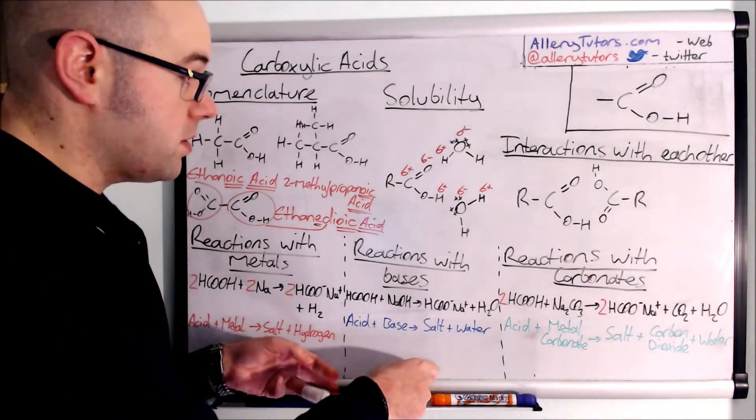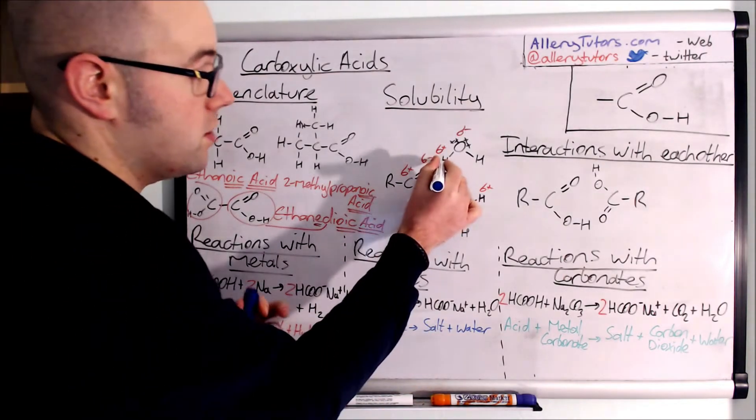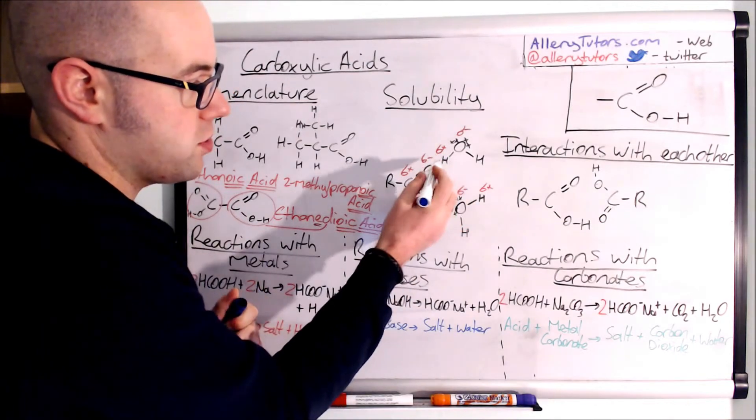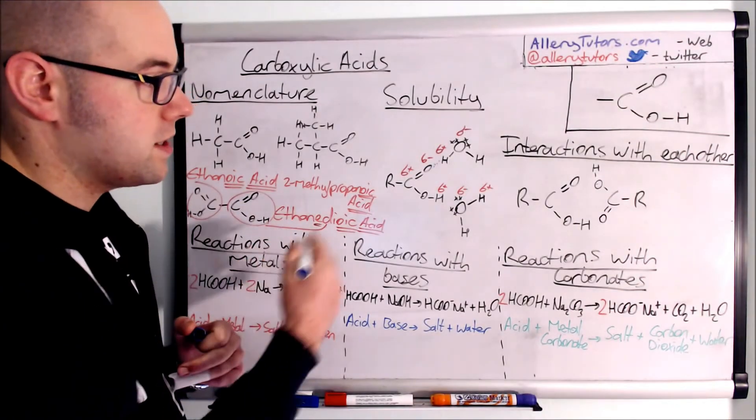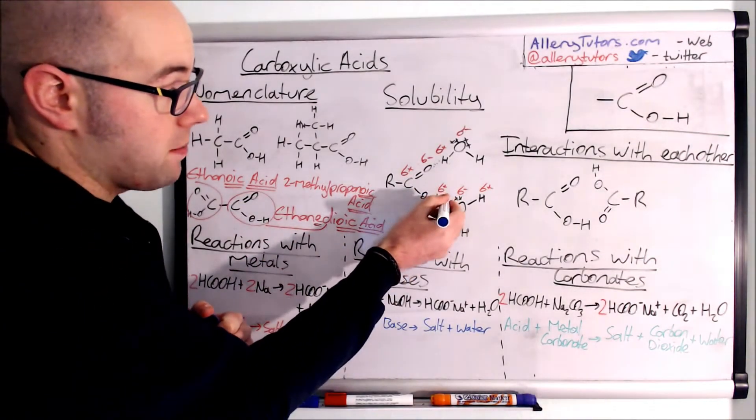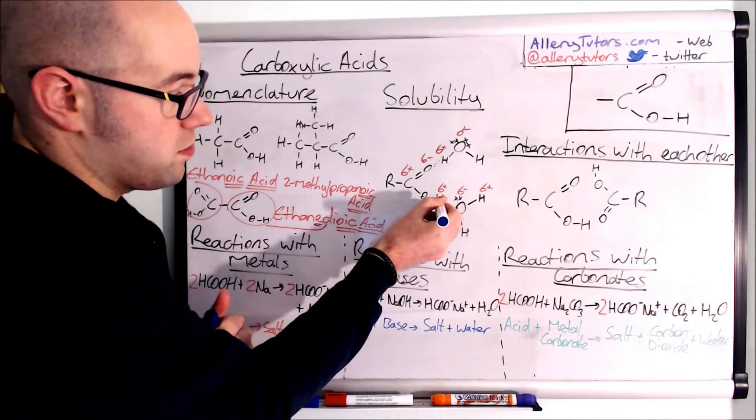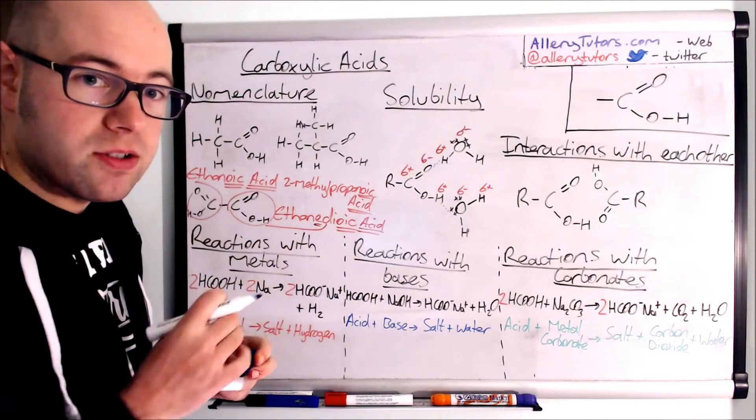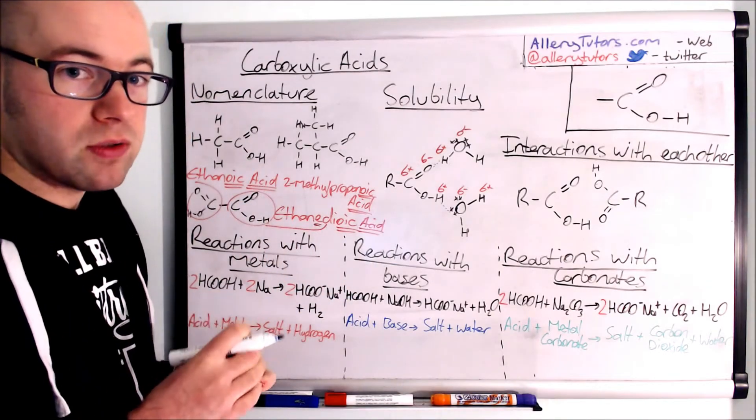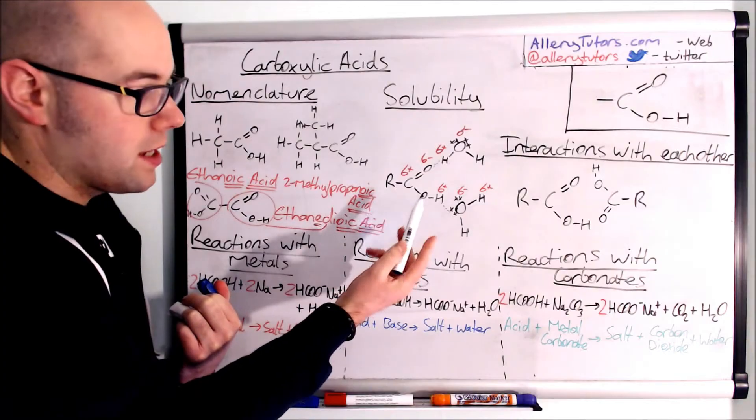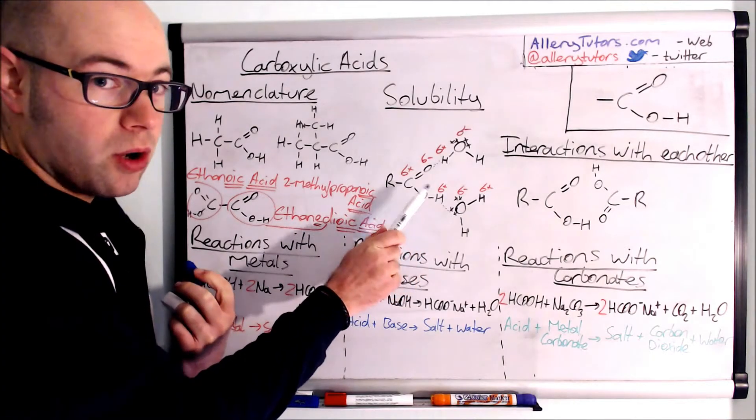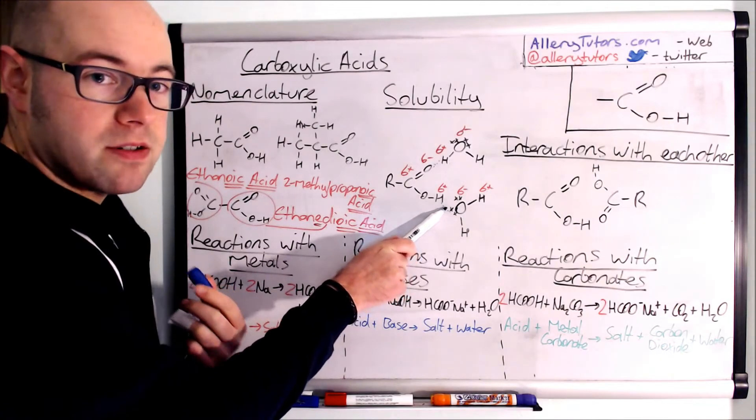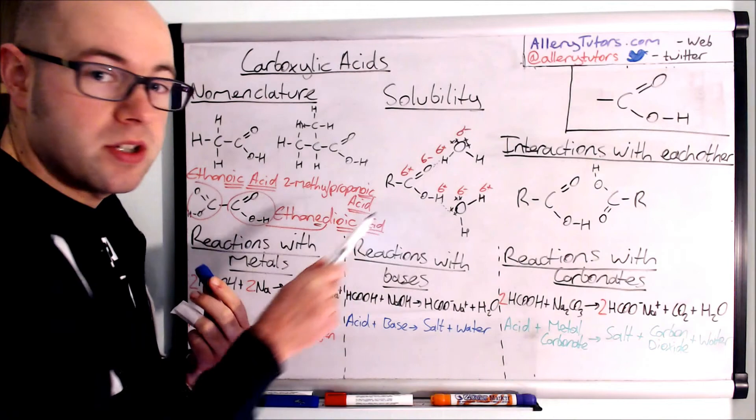And to show this hydrogen bond we basically just need to show a dotted line between the delta positive on the water which is the hydrogen and the delta negative oxygen on the carboxylic acid and vice versa. So again with this one we're going to show the hydrogen bond between the hydrogen and the lone pair. Now be careful if they ask you to draw all lone pairs. You must draw all lone pairs.